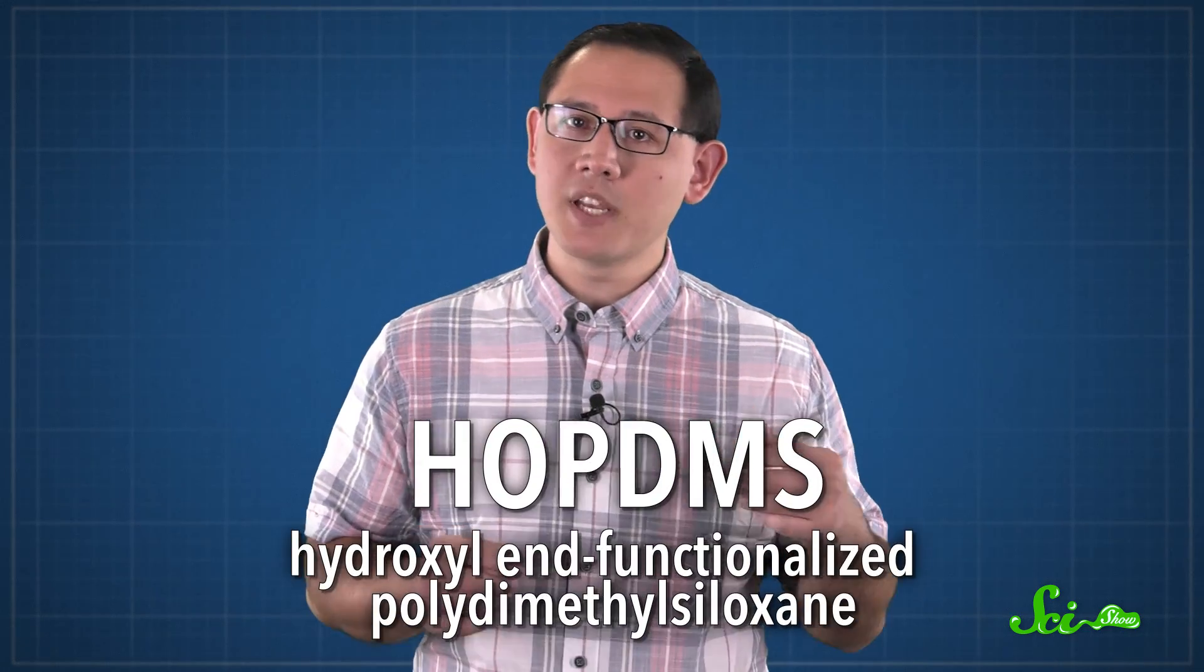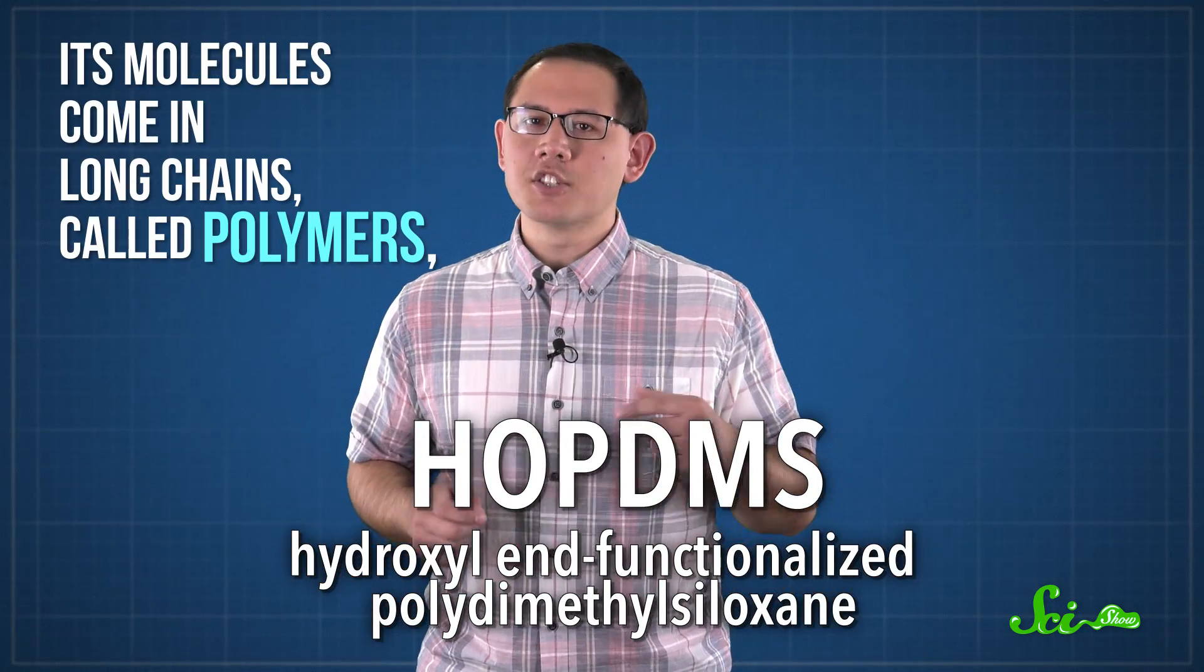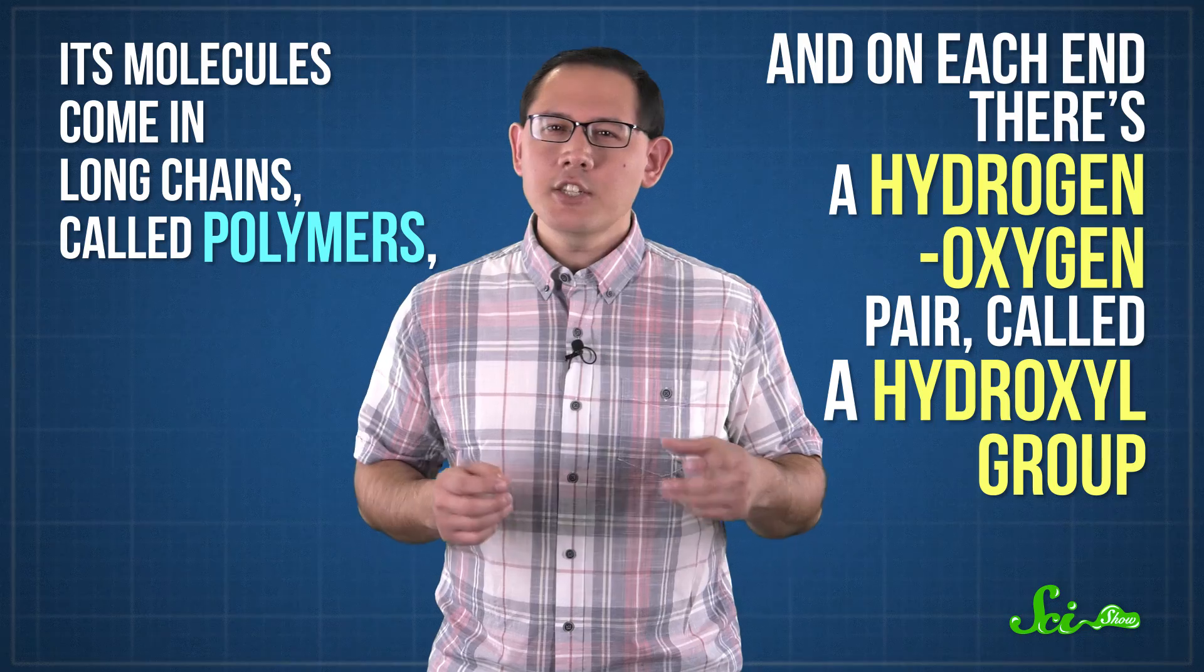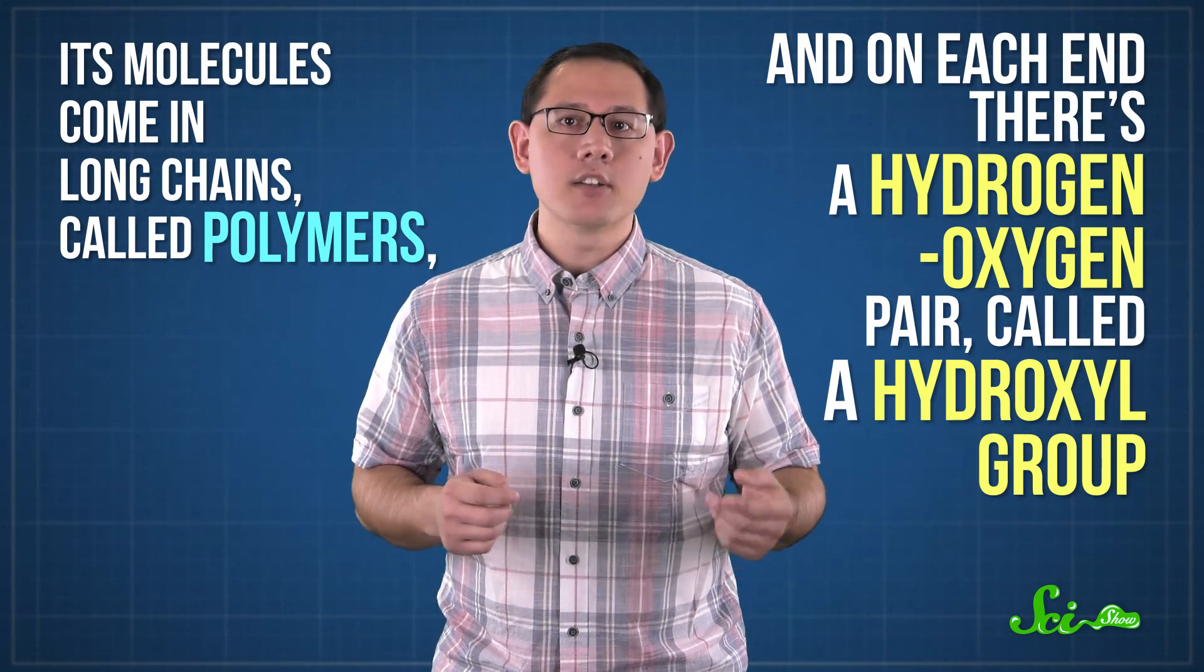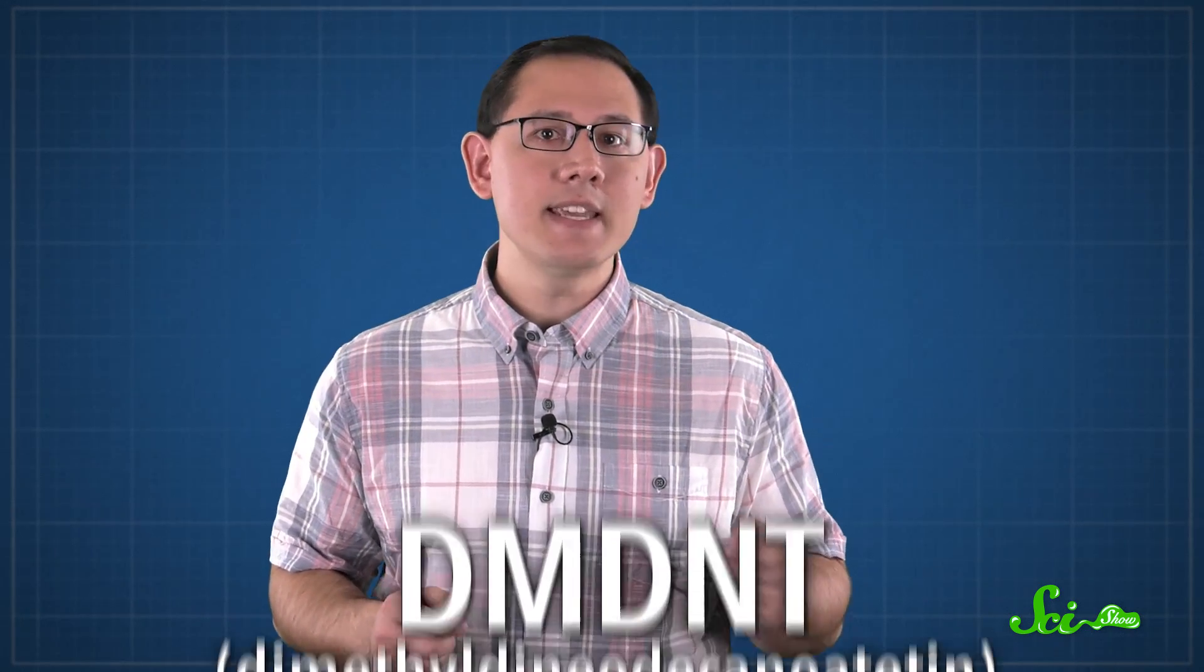A team at the University of Illinois tried this, using a healing agent called HOPDMS. Its molecules come in long chains, called polymers. And on each end, there's a hydrogen-oxygen pair, called a hydroxyl group. Then the researchers added tiny packets, each about the size of a grain of sand, filled with a second chemical that works as a curing agent, called DMDNT.